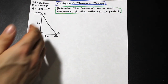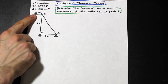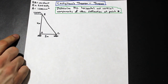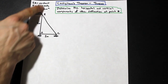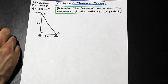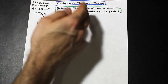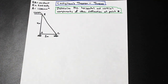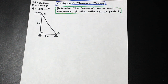So we have a truss here on the left — pretty simple truss, 120 kilonewton lateral load — and everything else is given. We're asked to determine the horizontal and vertical components of the deflection at point B. So they're asking for both, and I'm going to show you a good way to do this.